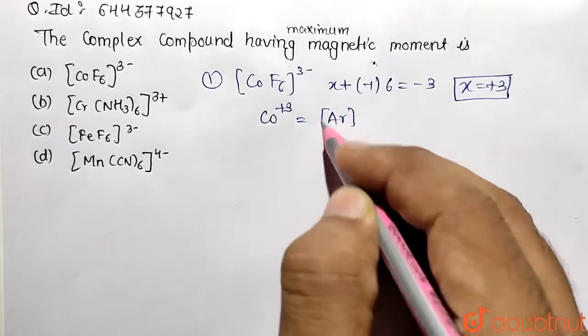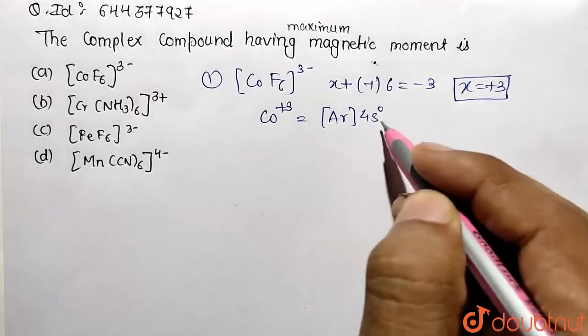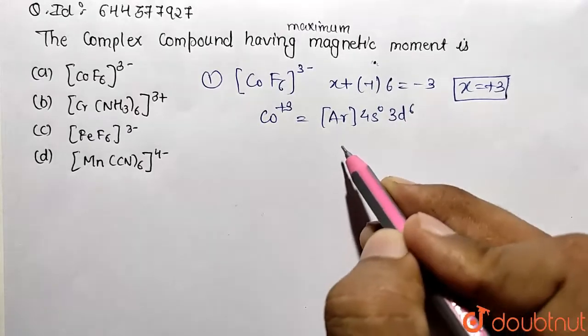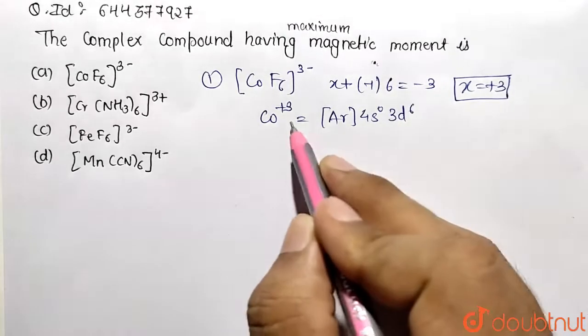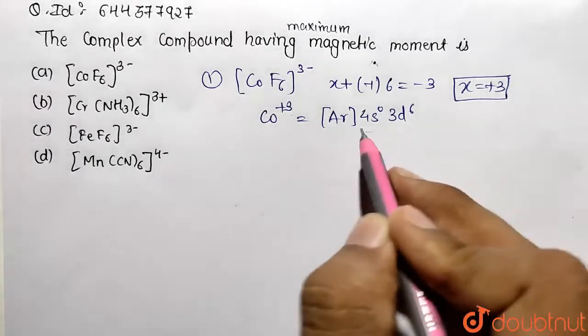Now 4s is 0 and we are left with only 3d⁶. Why? Because the ground state configuration is 4s² 3d⁷, and after ionizing these electrons we are left with this one only.